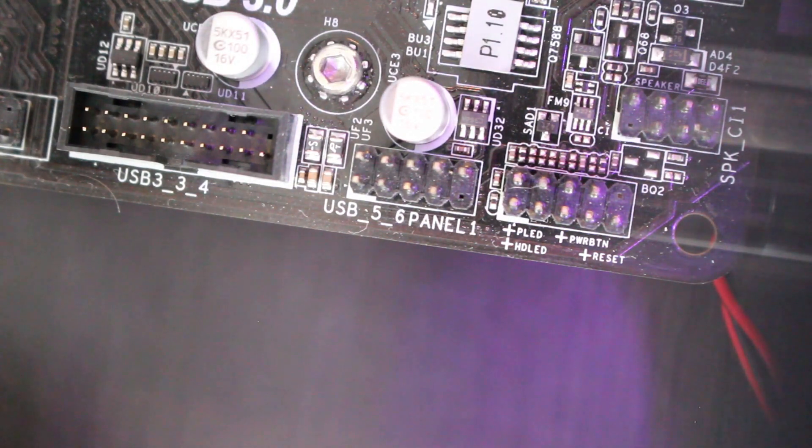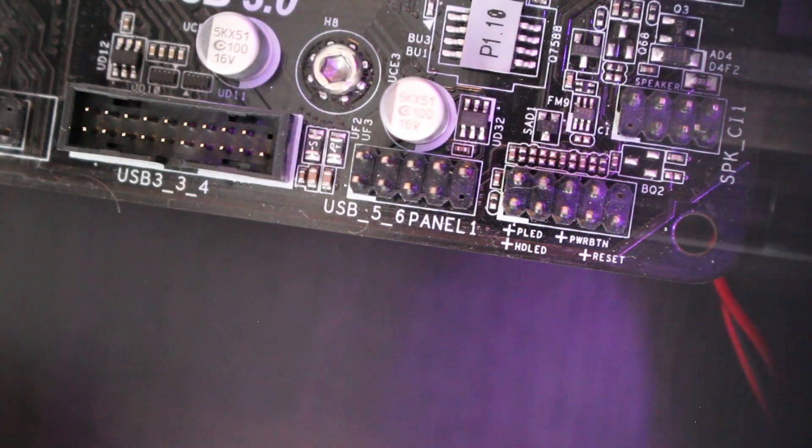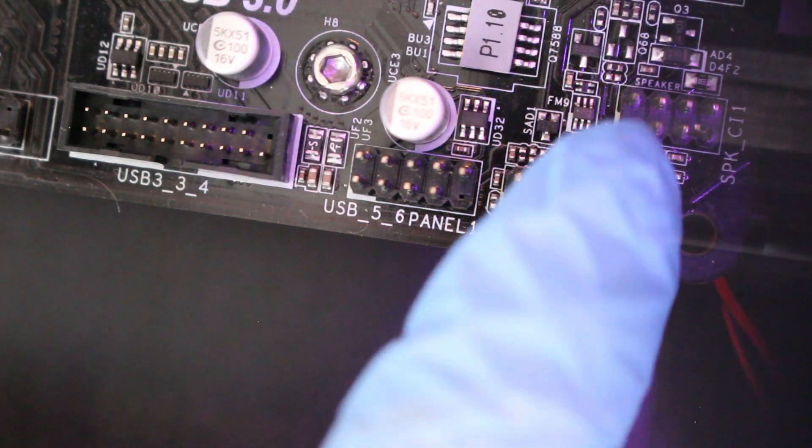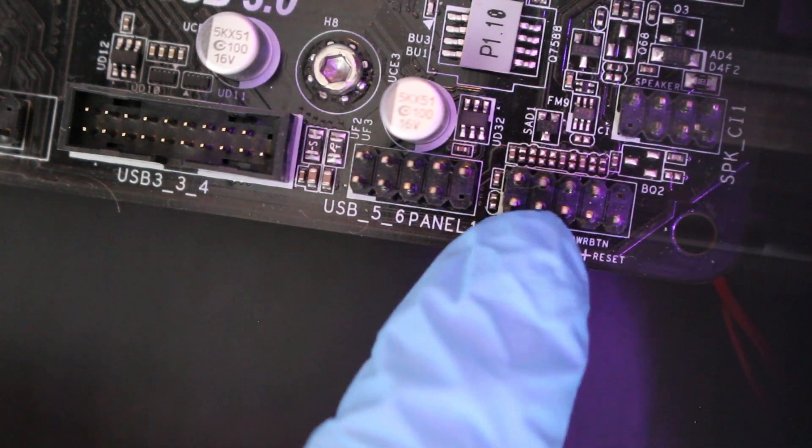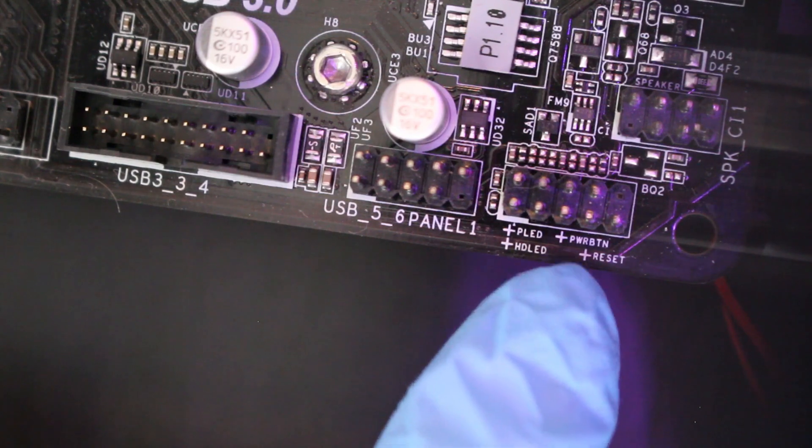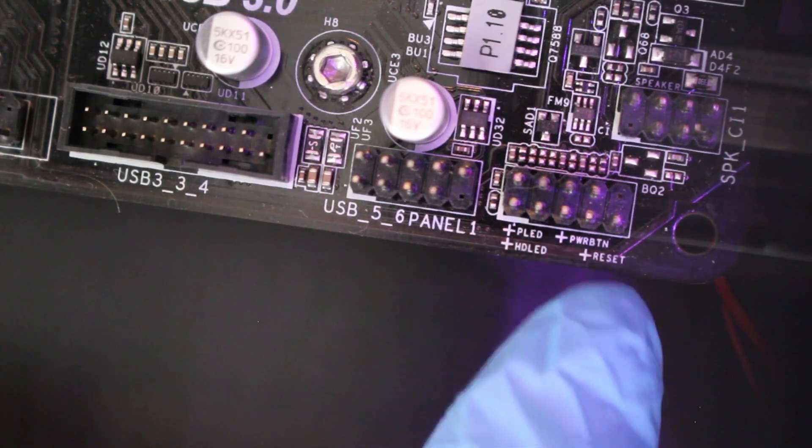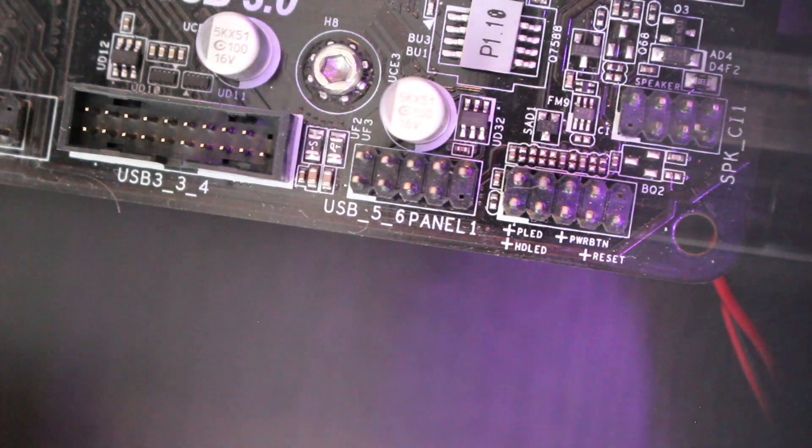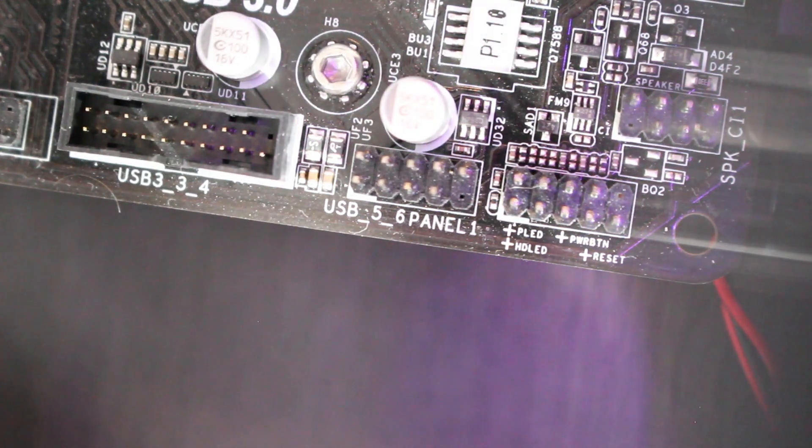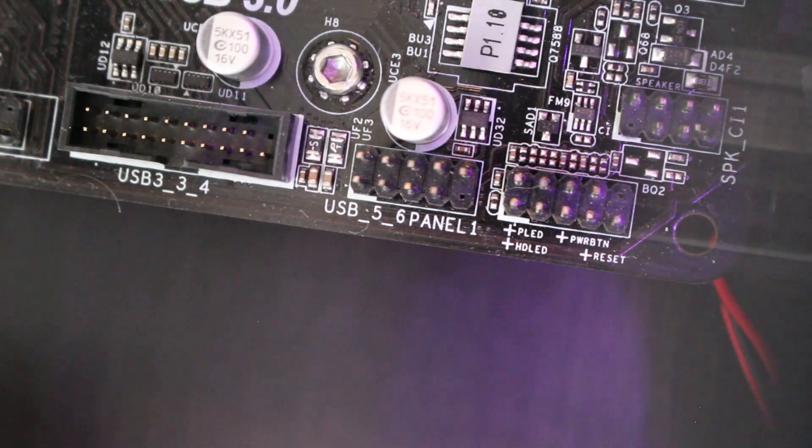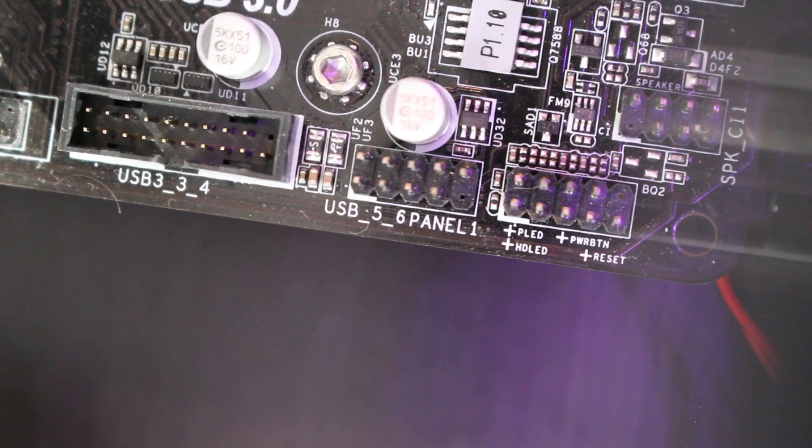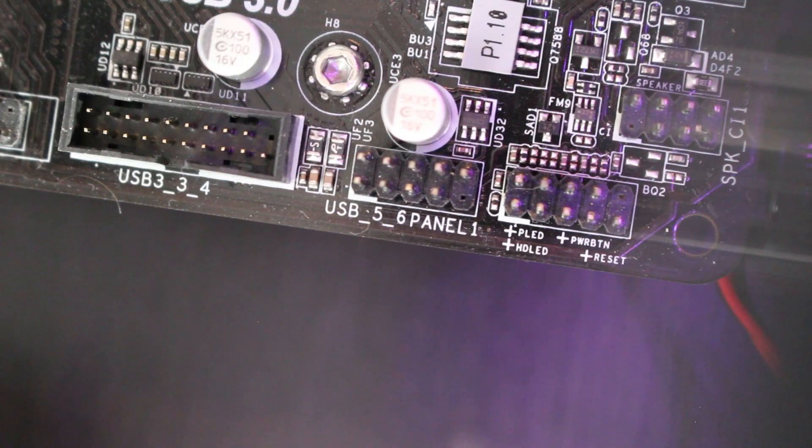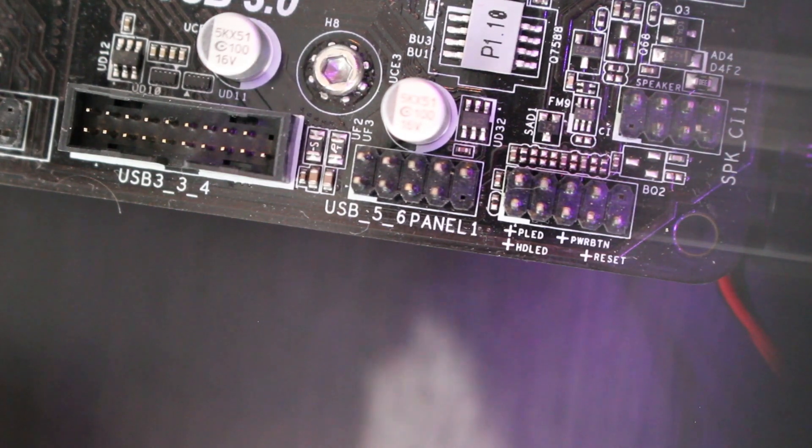Okay, so here we are at the system panel header on the motherboard, just locate it right here. You can even see it says right there PWRBTN and reset. So we're going to go according to our diagram, and I'm going to use a screwdriver to touch those two terminals that I know are for power and ground together for a split second and see if my PC starts.